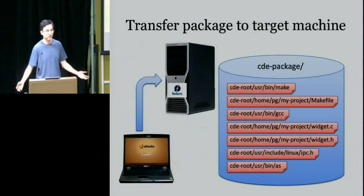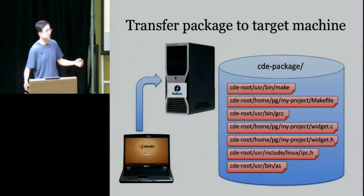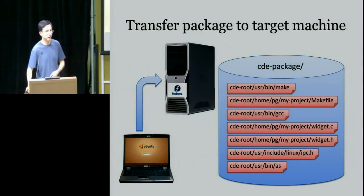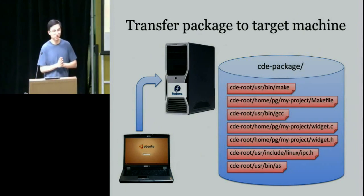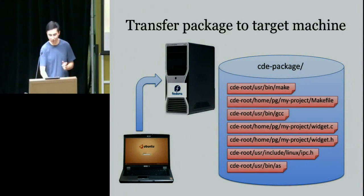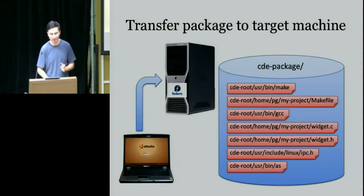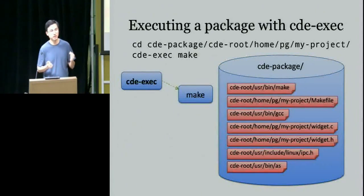Now the package is self-contained — it's just a directory, so you can tar it, gzip it, and move it to another computer. Let's say you started with an Ubuntu laptop and want to move it to a Fedora server. Just move the package to the other computer. It has to be the same architecture since we're just running binaries. Once on the other computer, you execute the package with CDE-exec — and note that the other computer does not have make, GCC, kernel headers, or anything; it could be a bare-bones Linux install.